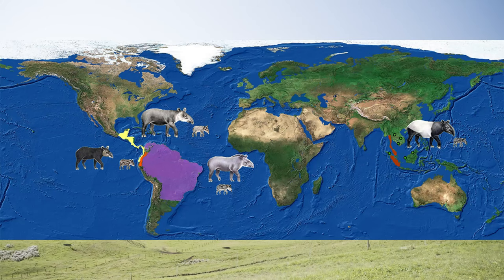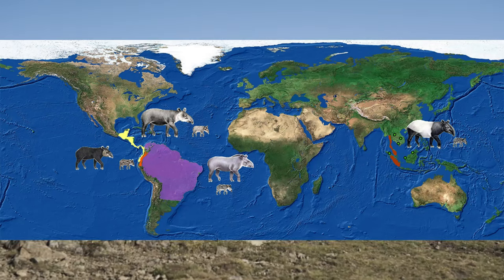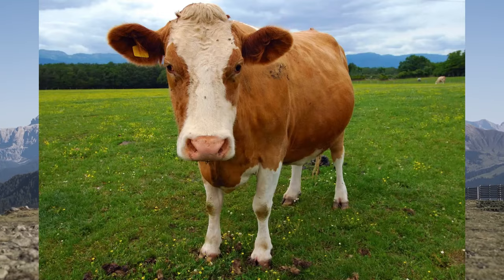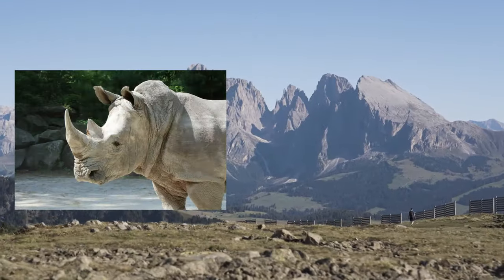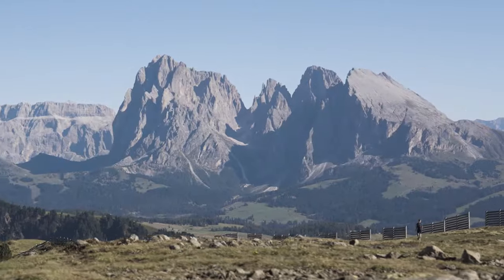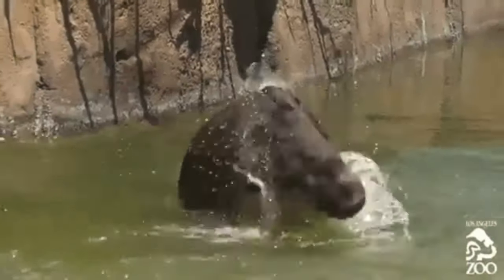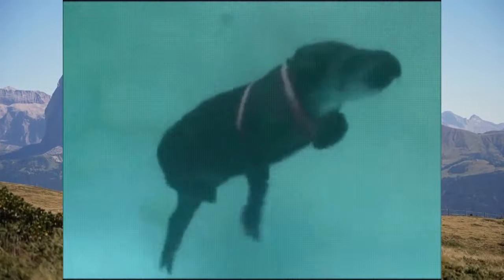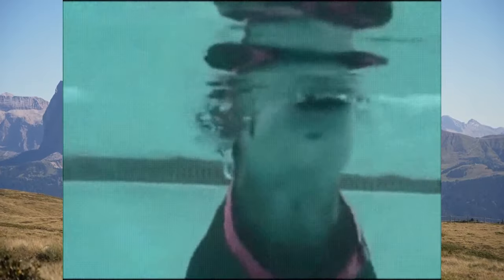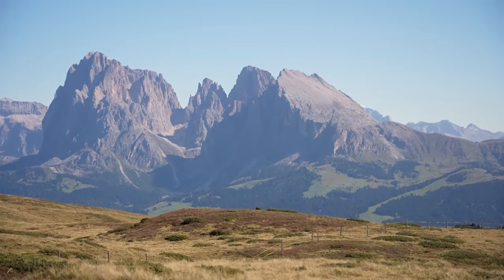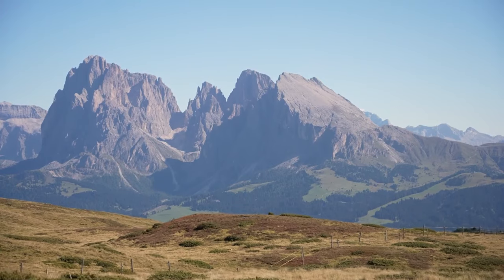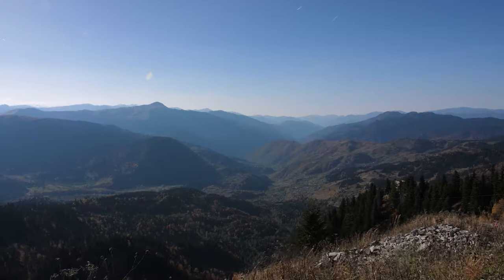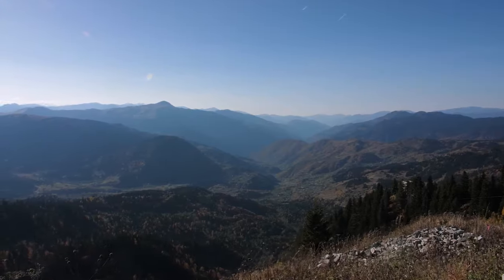Tapirs are chonky fellas that live in South and Central America and Southeast Asia. While they may resemble a pig, they're more closely related to rhinos and horses. They spend lots of time in and around water — cooling off from the heat, avoiding predators, and feeding there. When they enter the water, they let themselves sink to the bottom like a porky anchor, then take a nautical stroll feeding on the vegetation. They live a simple, peaceful, perhaps even enviable life.